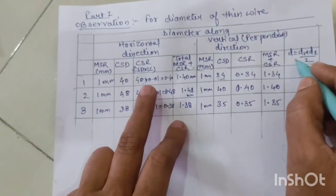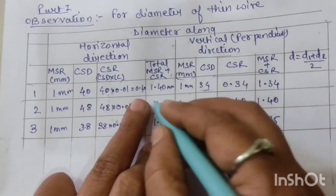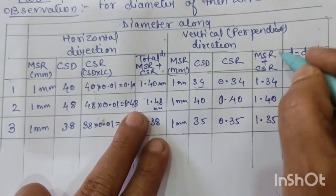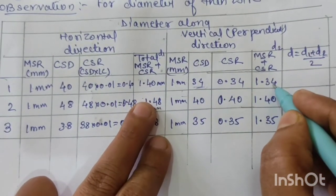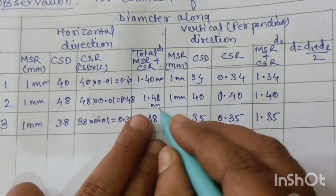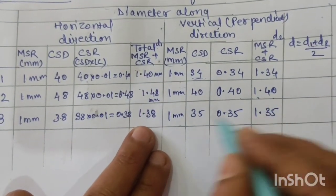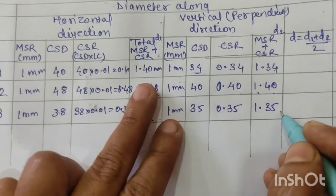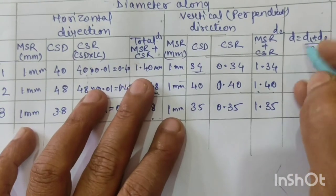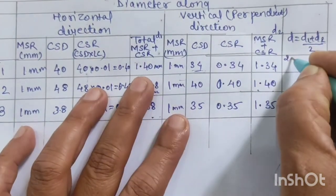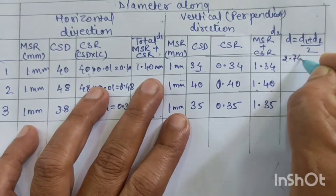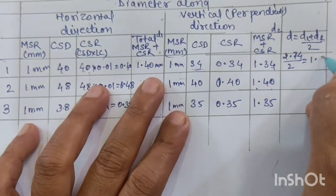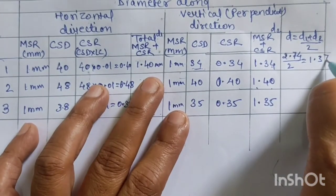The diameter D is calculated as D = (D1 + D2) / 2, where D1 is the horizontal reading and D2 is the perpendicular reading. So for the first pair: (1.40 + 1.34) / 2. For the second pair: (1.48 + 1.40) / 2 = 2.88 / 2 = 1.44 mm. For the third pair: (1.38 + 1.35) / 2 = 2.73 / 2 = 1.36 mm. Also 1.37 mm for the first pair.